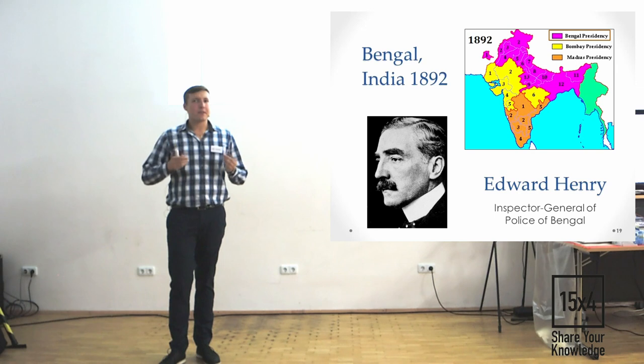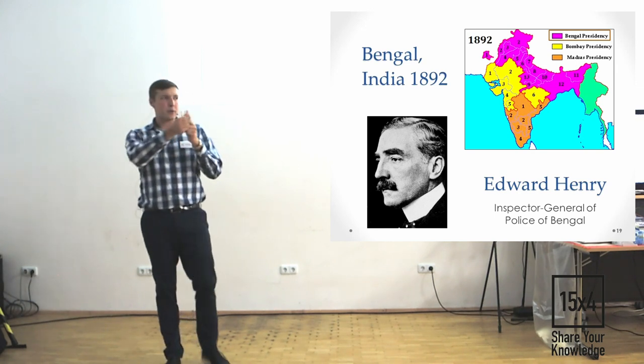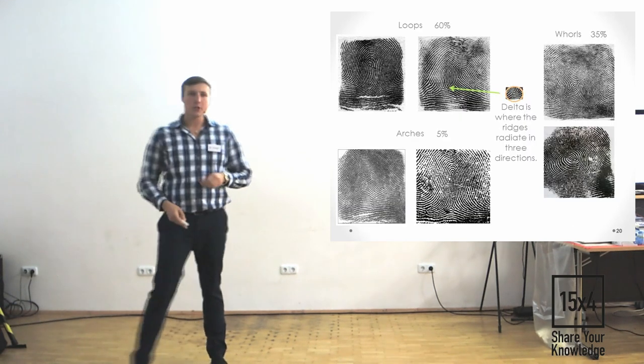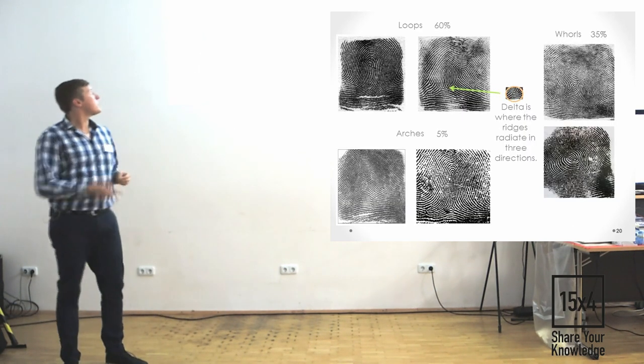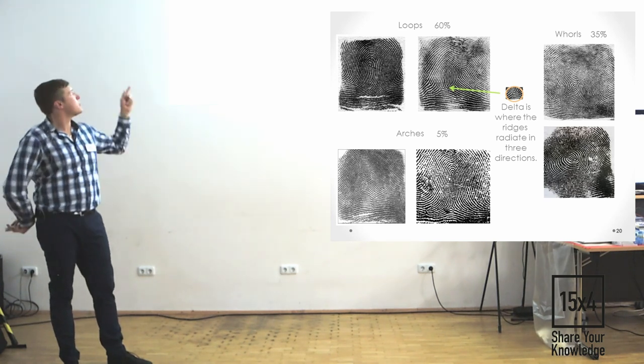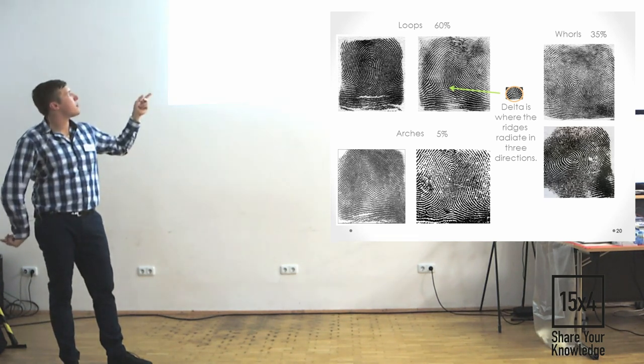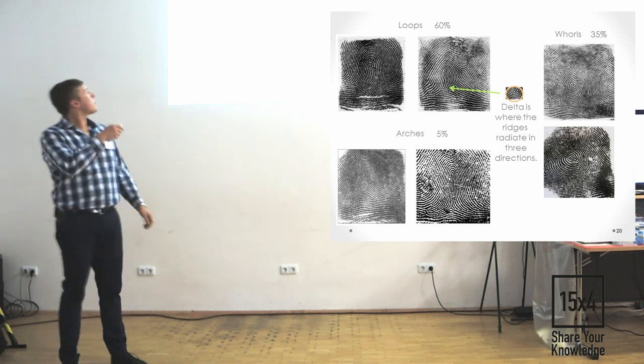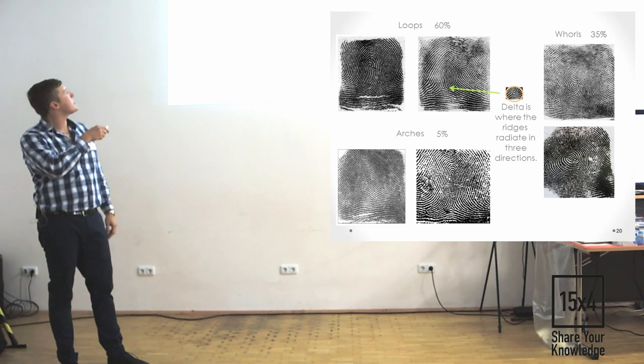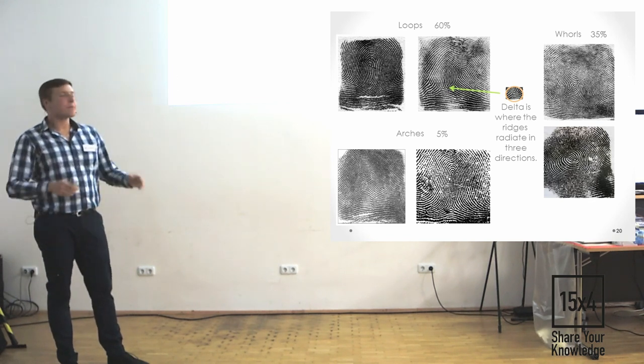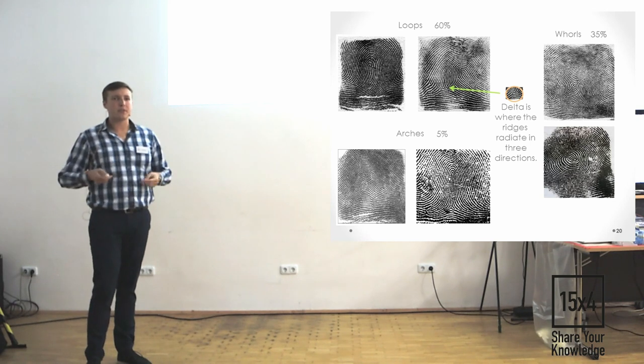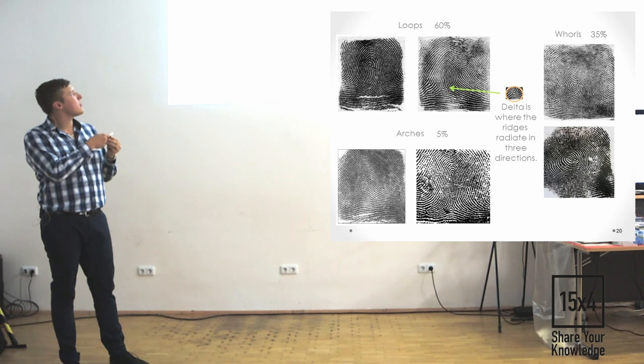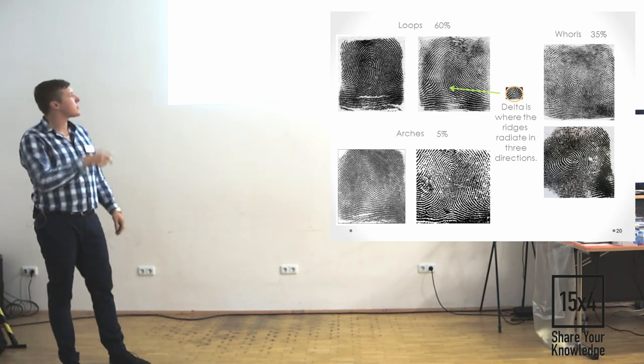Inspired by the scientific article that every papillary drawing is unique for every person, he found a way how to systematize it. Every fingerprint drawing could be divided into three groups. Average loops, whorls, and arcs. How to understand which one is what? We have in loops only one delta. Delta is a triangular area where the ridges radiate in three different directions. Whorls have two of them. Here. And here, for example. And arcs have none of them.